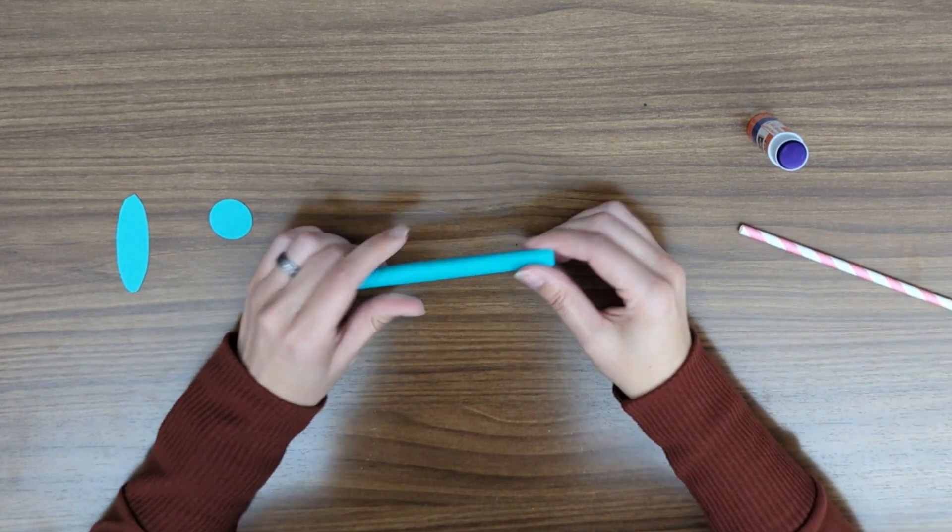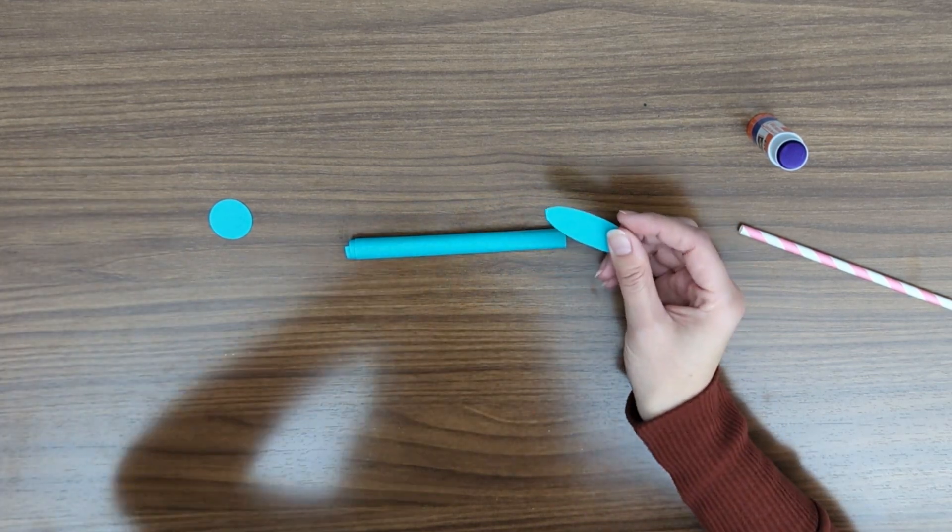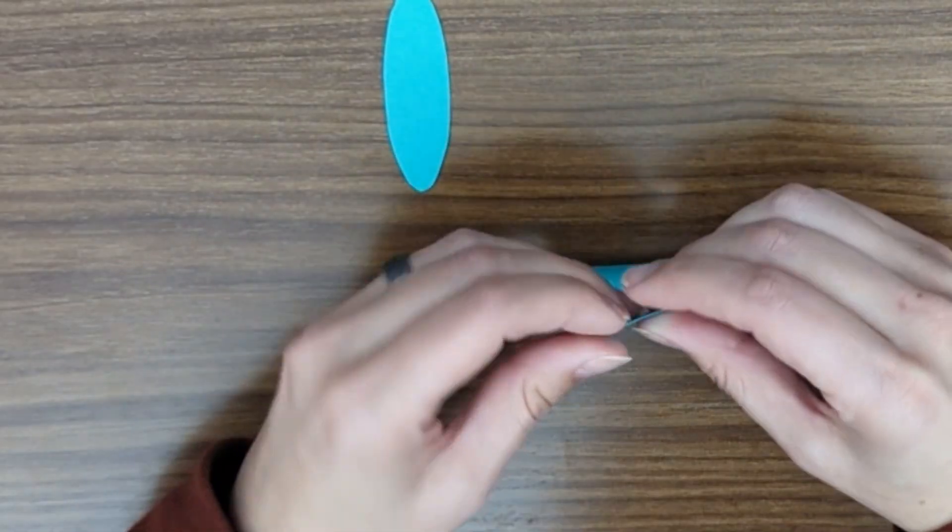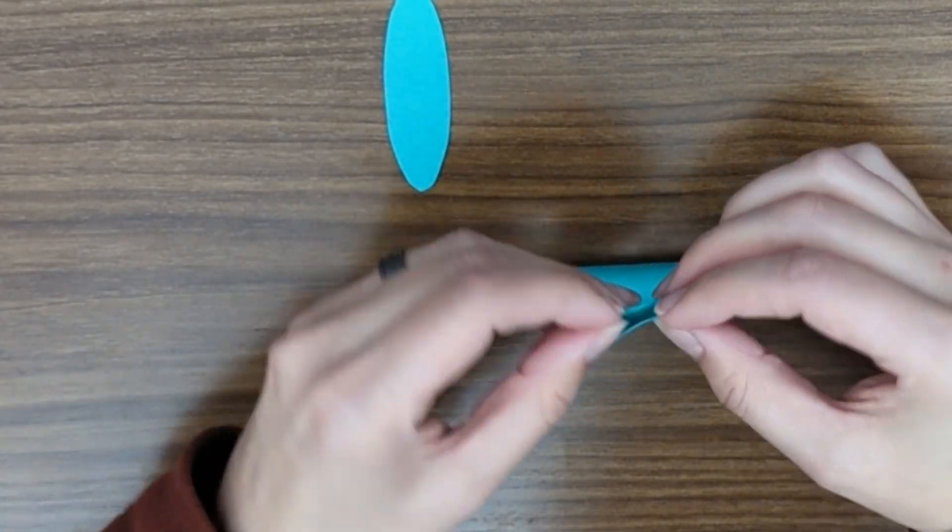Now that we have that glued, we can glue on the two other pieces of our rocket. For this circle, you can just fold it in half just like that.